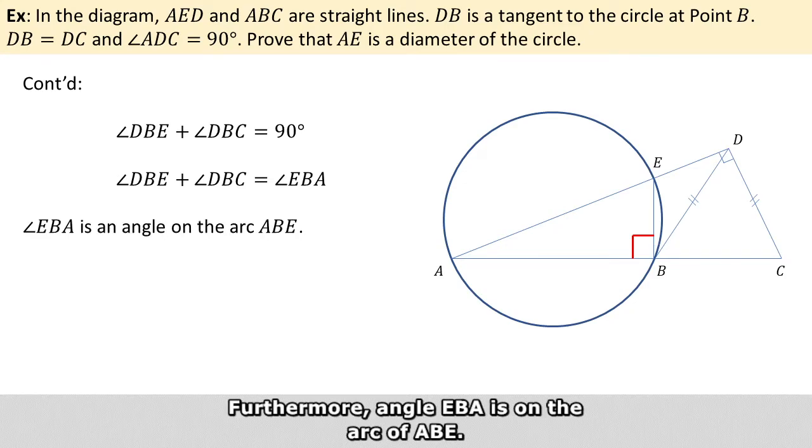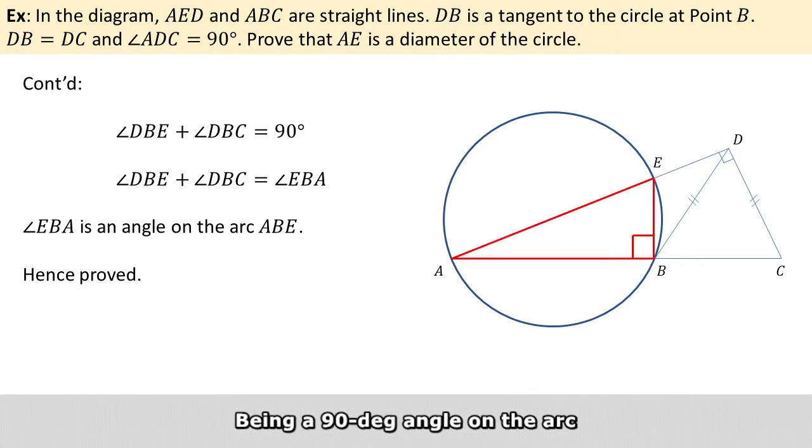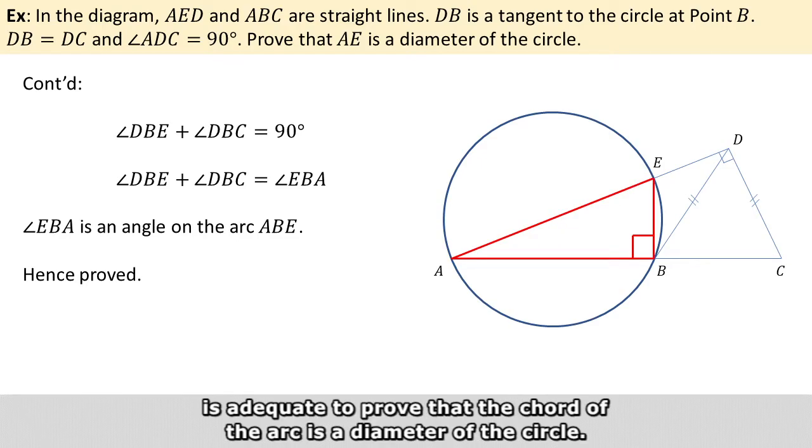Furthermore, angle EBA is on the arc of ABE. Being the right angle on the arc is adequate to prove that the chord of that arc is the diameter of the circle.